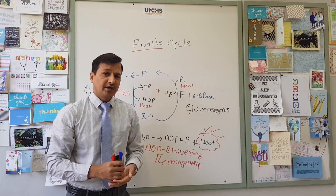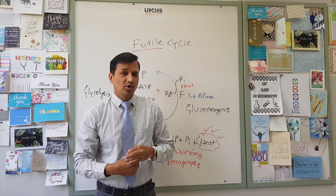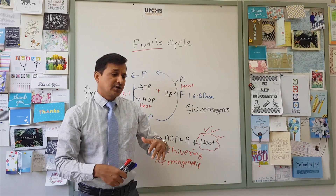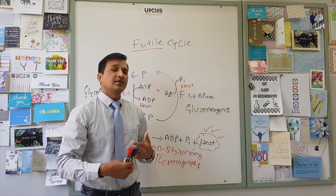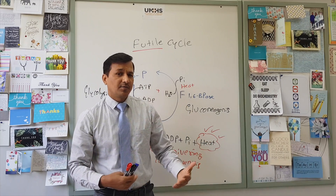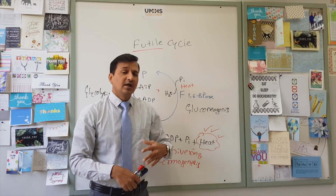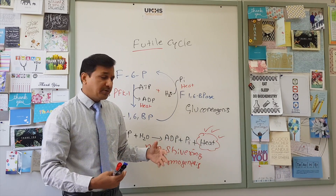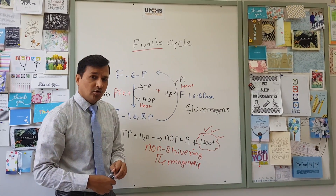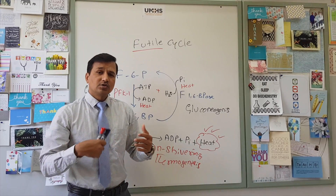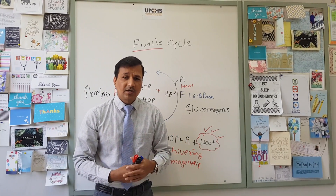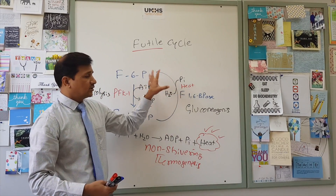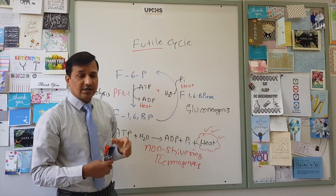Heat generated will maintain the body temperature. For example, in neonates, where brown adipose tissue is more abundant, a lot of heat has to be generated to maintain body temperature in the new environment — the temperature is lower than the mother's womb when the baby is born. So thermogenesis needs to go on. Brown adipose tissue expresses uncouplers to generate heat, and this futile cycle is another way to generate that heat.